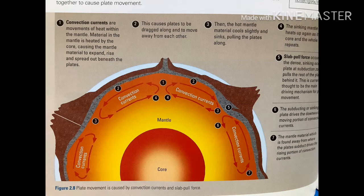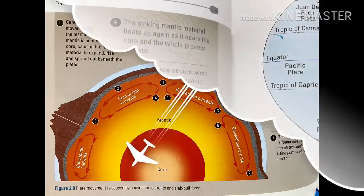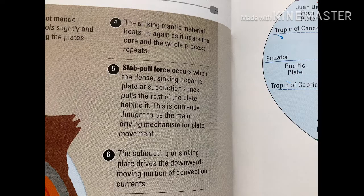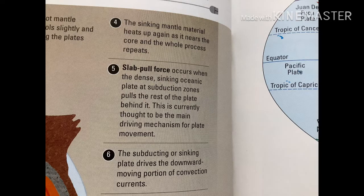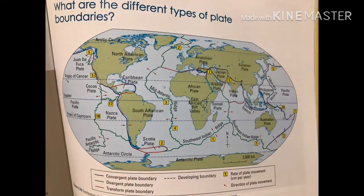There's a difference in temperature between the parts nearer to the core, which are hotter, and the part touching the bottom of the crust, which is cooler. With this temperature difference, convection currents occur within the mantle. Together with these convection currents is the concept of slab pull force — when oceanic plates subduct and pull the rest of the plate behind them, reinforcing the convection current motion. Together, slab pull force and convection currents result in the continuous tectonic plate movement on the crust.